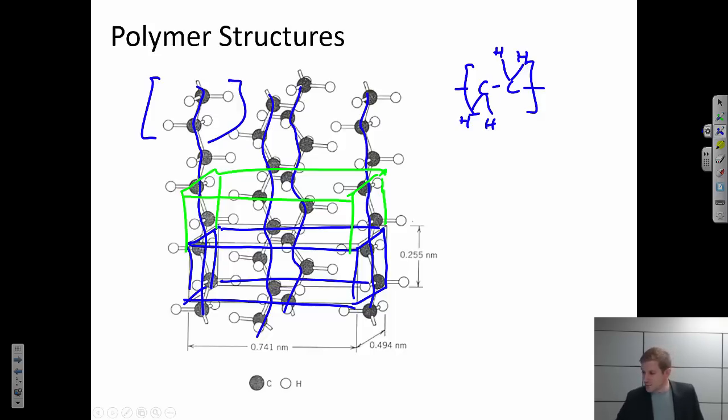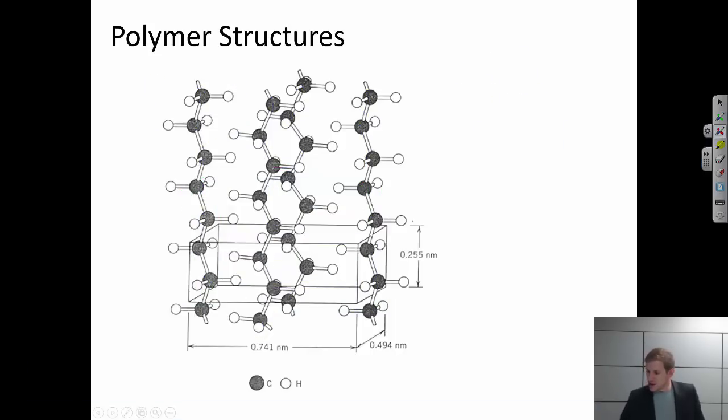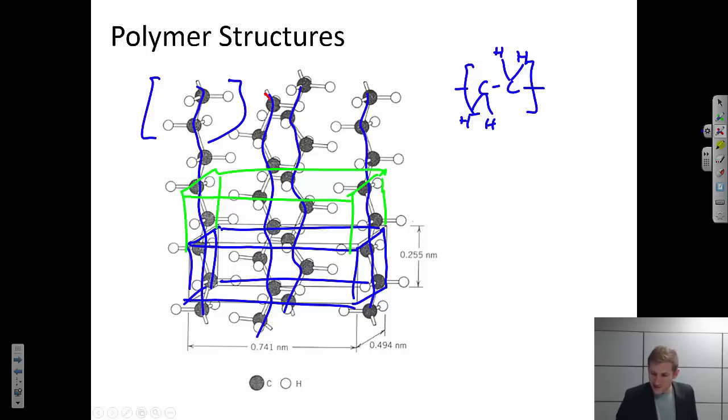So another thing to keep in mind is that polymers tend to have strong covalent bonding along the backbone, so between the carbon atoms in this case. Now, the bonding between polymer chains is relatively weak. This is a form of secondary bonding or van der Waals bonding.